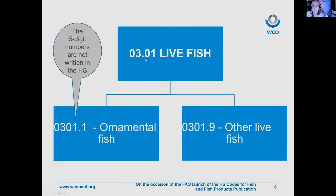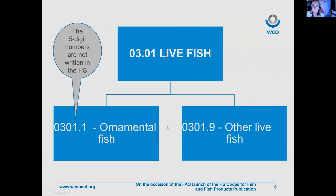Once you have the heading level, you have the first level of classification. You then go down to the five-digit level. These five-digit numbers are not actually written explicitly in the HS — they exist implicitly. So if we're referring to the subheading for ornamental fish, we would refer to it as 03011, but you would not necessarily see that written. With these five-digit subheadings, they belong to a specific heading, and when looking for the correct subheading, we can only compare subheadings that belong to the same family.